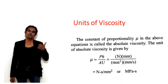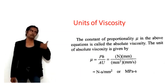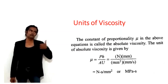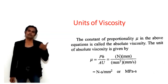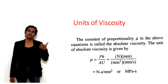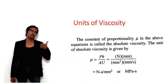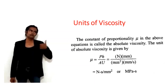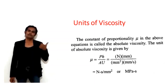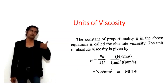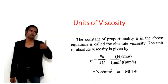This is how the units of viscosity are determined. The constant of proportionality mu is the absolute viscosity. Force is in Newtons, H is in mm, area is in mm squared, and velocity is in mm per second. So the unit of absolute viscosity is Newton-seconds per mm squared, or equivalently megapascal-seconds.